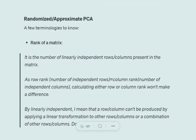It is the number of linearly independent rows and columns present in the matrix. As row rank (number of independent rows) equals column rank (number of independent columns), calculating either row or column rank won't make a difference. By linearly independent, I mean that a row or column can't be produced by applying a linear transformation to other rows or columns or a combination of other rows or columns.